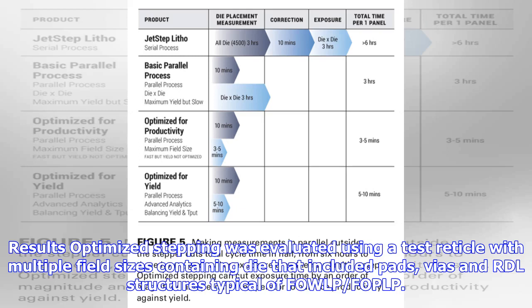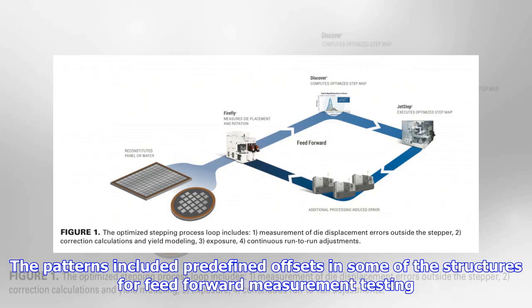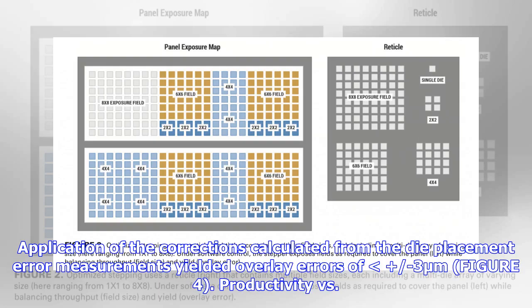Results: optimized stepping was evaluated using a test reticle with multiple field sizes containing die that included pads, vias, and RDL structures typical of FOWLP, FOPLP. The patterns included predefined offsets in some of the structures for feedforward measurement testing. Application of the corrections calculated from the die placement measurements yielded overlay errors of less than minus 3 micrometers, Figure 4.